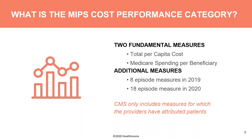When we look at the MIPS cost performance category, starting in 2018 there were two measures that have been carried forward: the first is Total Per Capita Cost, which measures how much it costs to take care of a Medicare patient for the whole year; the second is Medicare Spending Per Beneficiary, which measures the total cost every time a patient goes into the hospital for an entire episode, regardless of why.